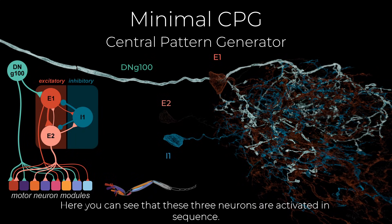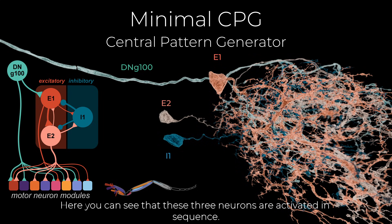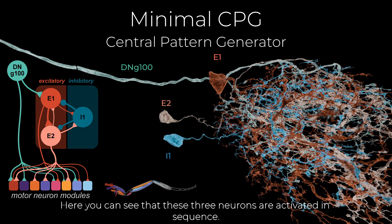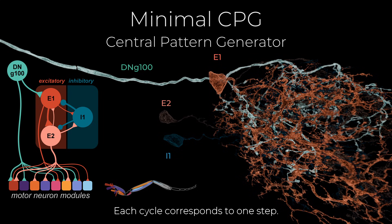Here you can see that these three neurons are activated in sequence. Each cycle corresponds to one step.